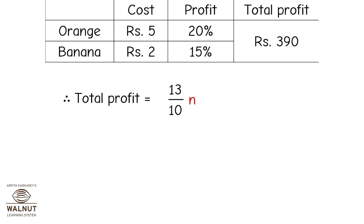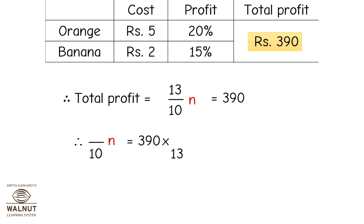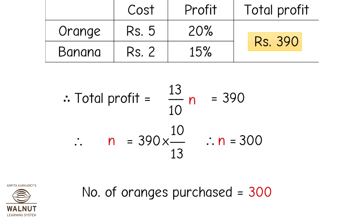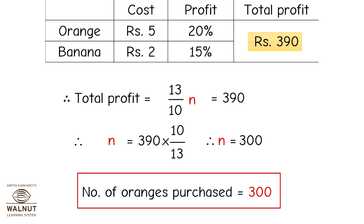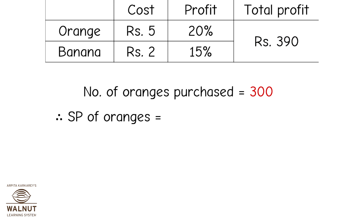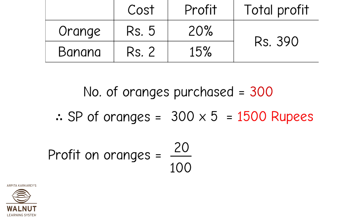Therefore total profit equals 13n upon 10, which equals 390. Solving: n equals 390 multiplied by 10 upon 13, therefore n equals 300. The number of oranges purchased is 300. The selling price of oranges is 300 into 5, which is 1500 rupees, and the profit on oranges is 20 upon 100 multiplied by 1500, which equals 300 rupees.